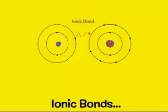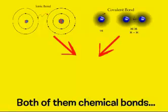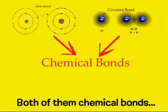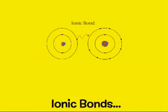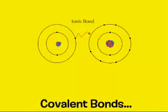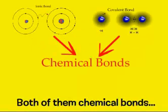Ionic bonds, covalent bonds, both of them chemical bonds. How are they made? What's the difference? Play the song again. Ionic bonds, covalent bonds, both chemical bonds.